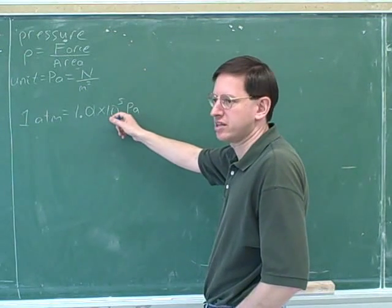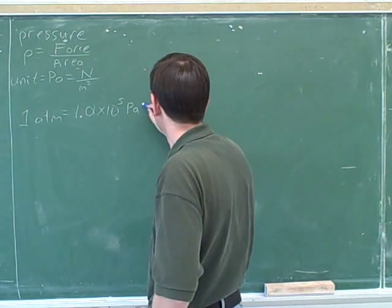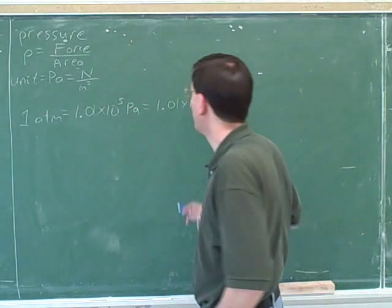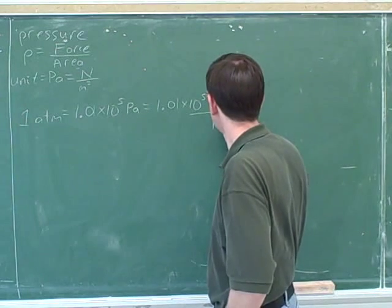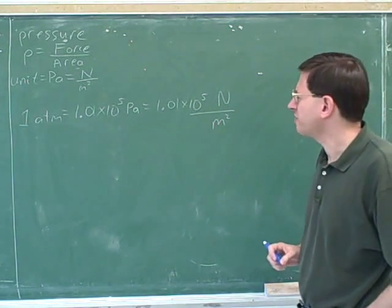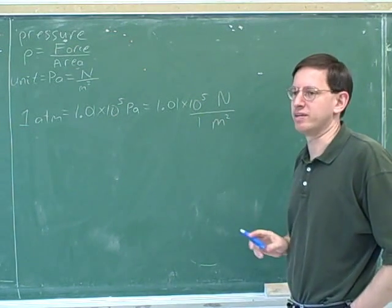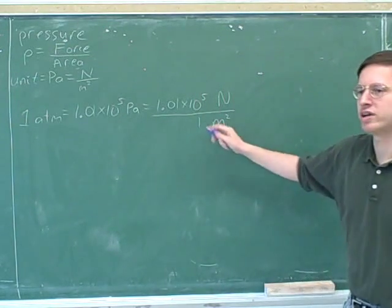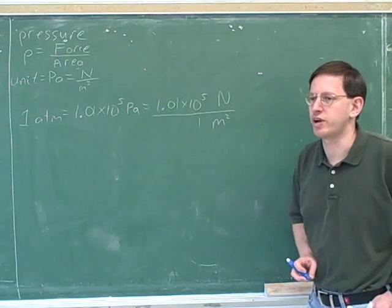One atmosphere is 1.01 times 10 to the fifth Pascal. Let's think about what that means. A Pascal is a Newton per square meter. When you have units in a ratio, it's a good trick to put the number one on the bottom to help you interpret it. So since we have a ratio of units here, let's put the number one on the bottom. Our pressure is 1.01 times 10 to the fifth Newtons per meter squared.